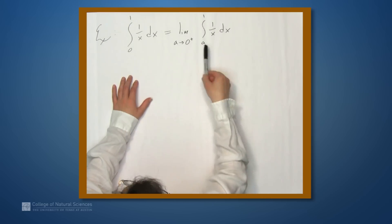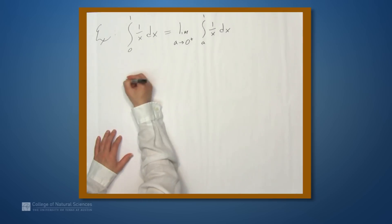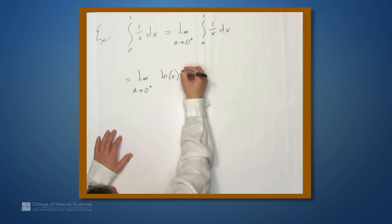And this we can deal with because a is now not 0. We're taking the limit as a approaches 0. a is no longer 0. So this is the limit as a approaches 0 from above, and we'll use the fundamental theorem to figure this out using an antiderivative. The antiderivative of 1 over x is natural log of x, and we'll evaluate this between 1 and a.